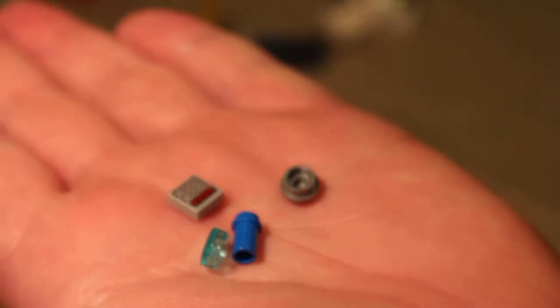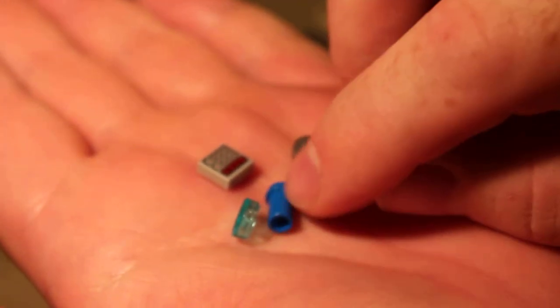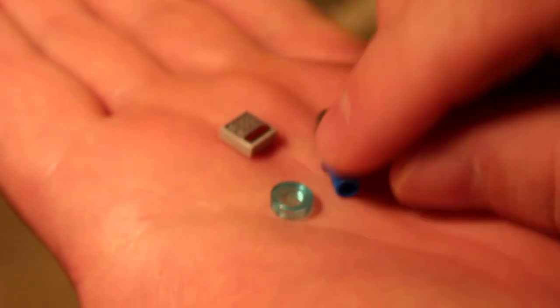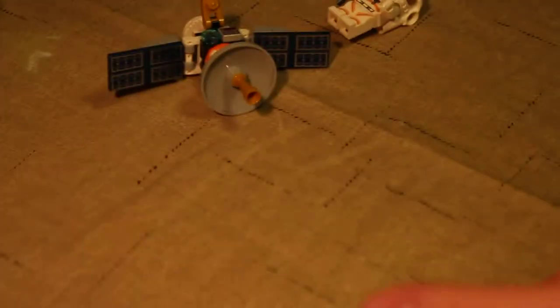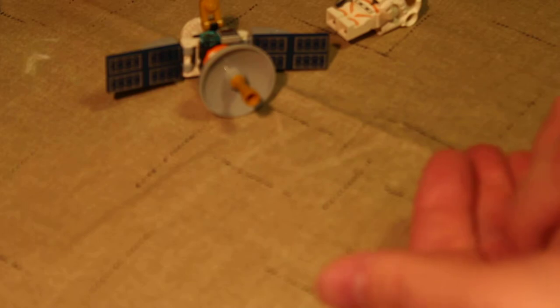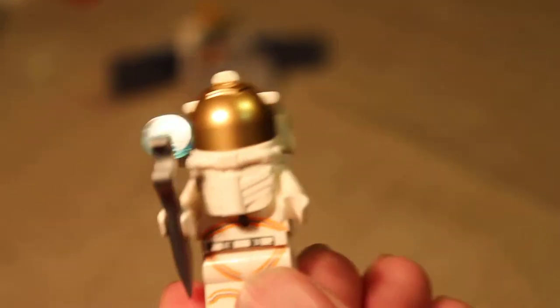And then these are our extra pieces. We got an extra number pad. An extra silver stud. An extra blue peg. And an extra light blue clear disc. Yeah. Anyway. Thanks for watching, everybody. I know this was a crappy video. But it's about space. I love space. The final frontier.